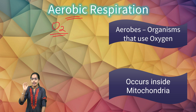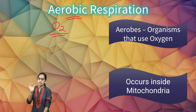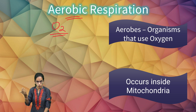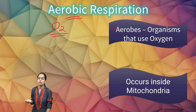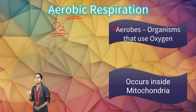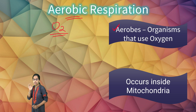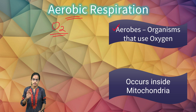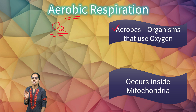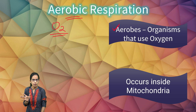In aerobic respiration, the organisms that use oxygen are known as aerobes. This process occurs mostly in plants and animals, and it occurs in mitochondria — the powerhouse of the cell.